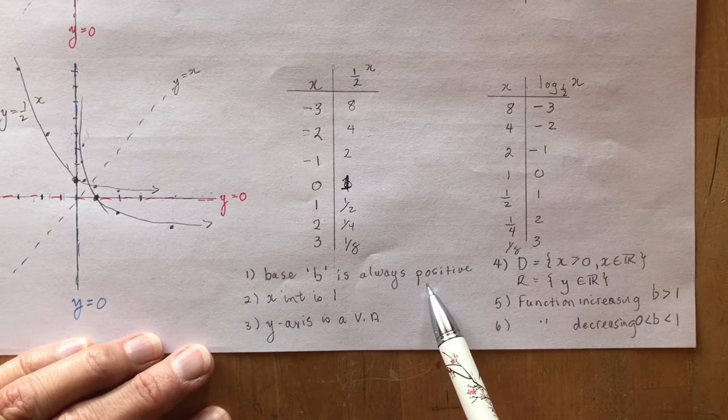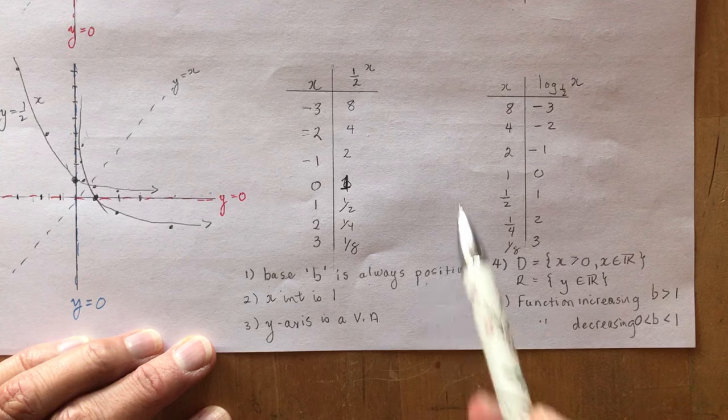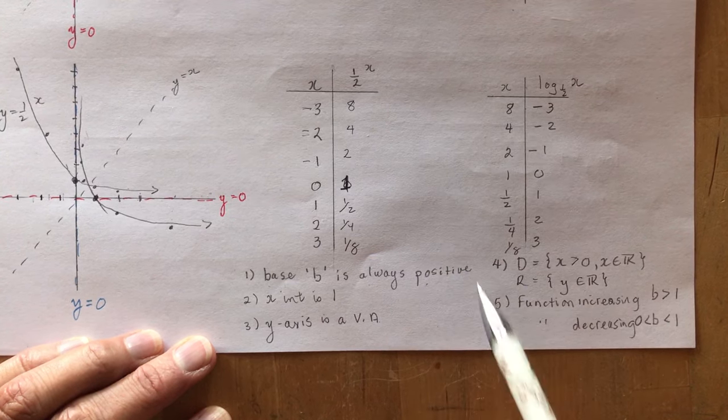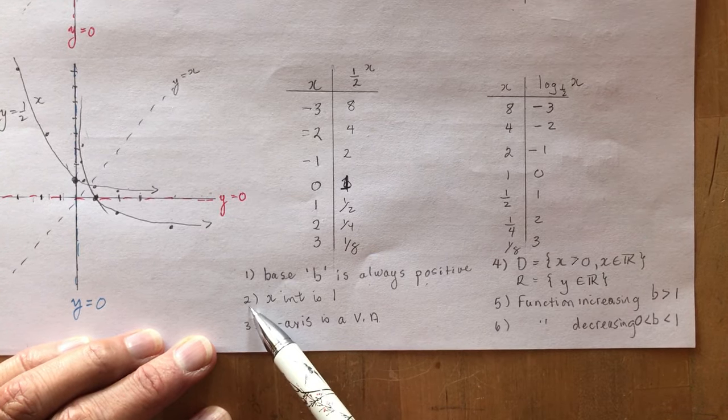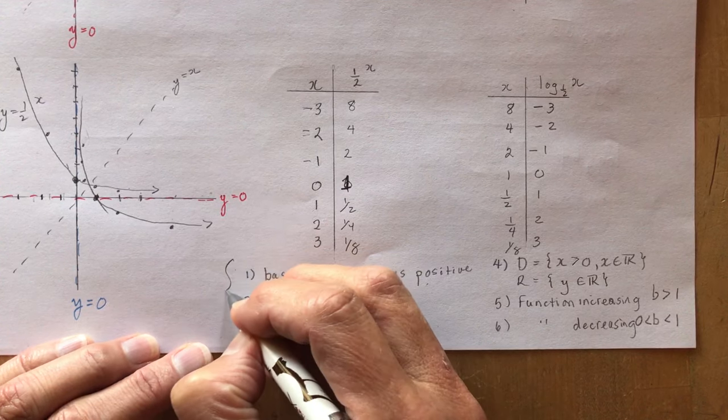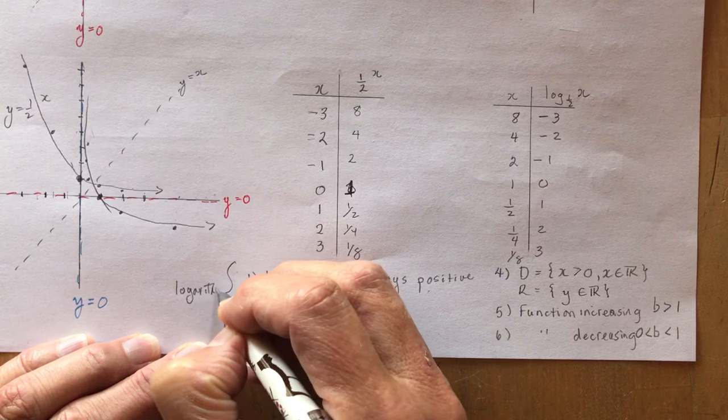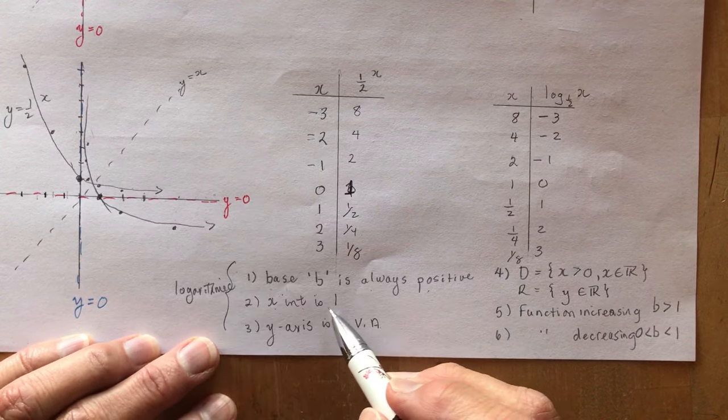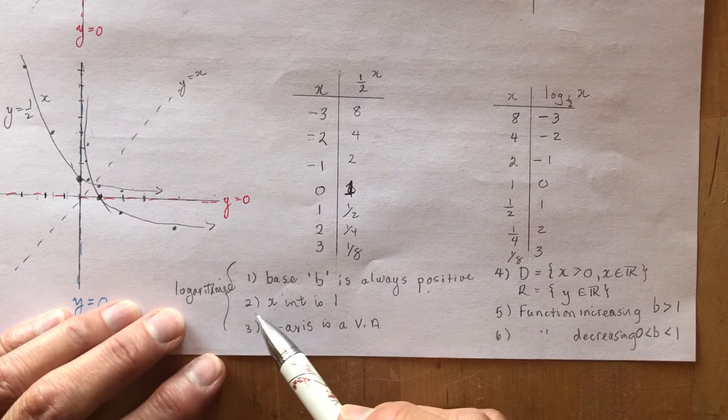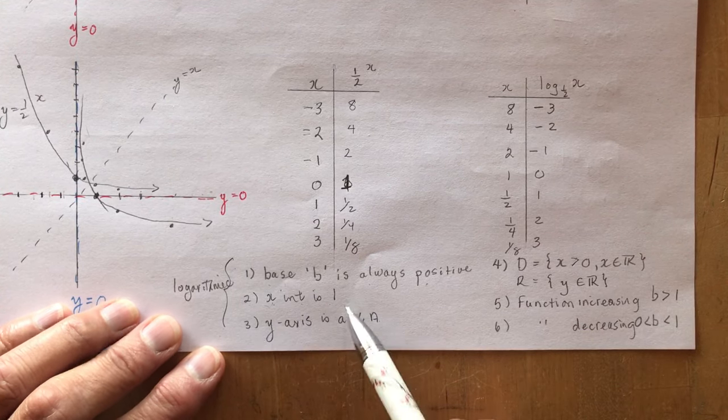There are some points that you should remember though. The base b is always positive, and I explained that to you. The x-intercept is 1. So this is for logarithmic functions. The exponentials are the other way around. The exponential function, the y-intercept is 1, but you're flipping it, you're changing position. So the x-intercept is always 1.